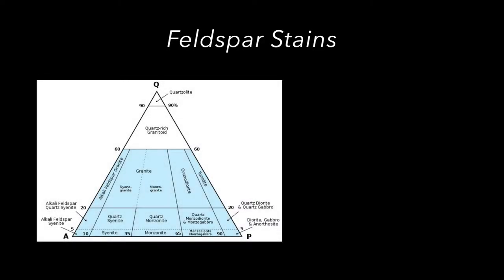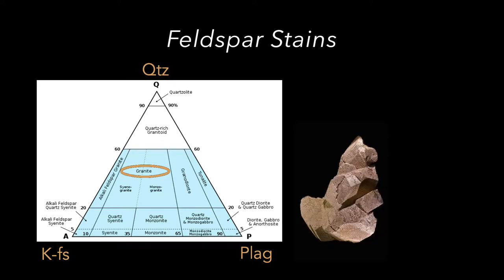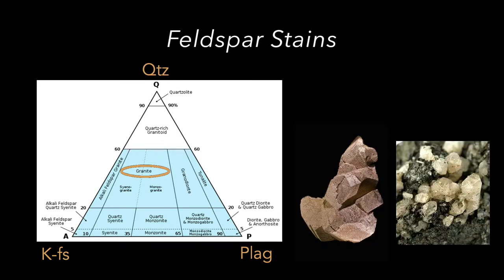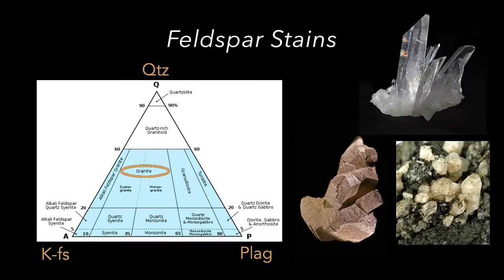Spectrum offers four stains for two important mineral groups. Feldspar stains discriminate between potassium feldspar, plagioclase, and quartz. Most igneous rock classifications rely upon the proportions of these three minerals, which are all colorless and have similar relief in thin section.